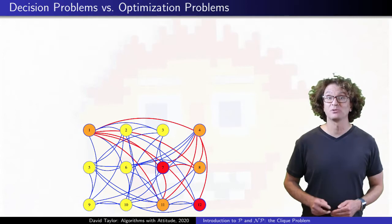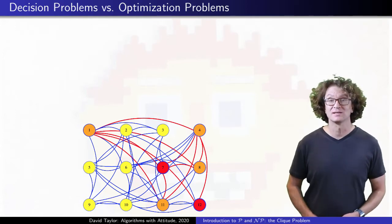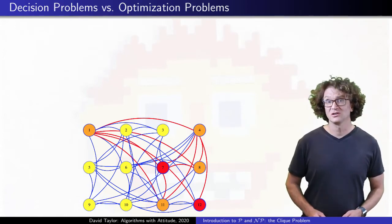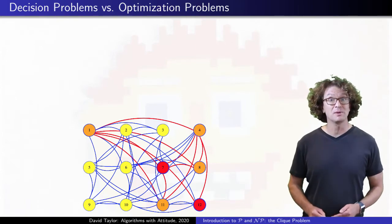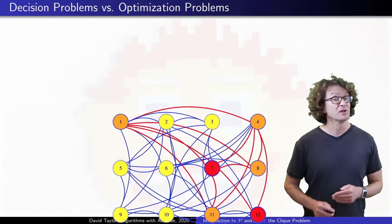Of course, lots of times we are interested in optimization problems, not decision problems. But if you had a way to efficiently solve the decision problem, you might be able to use that to solve the optimization problem.